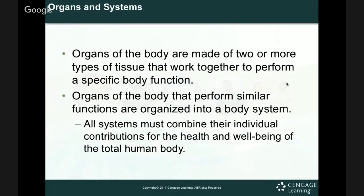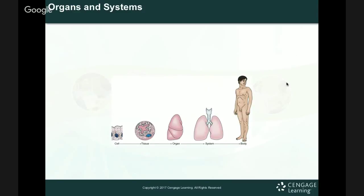The organs of the body are made of two or more types of tissue that work together to perform a specific body function. Organs that perform similar functions are organized into a body system — such as the muscular system, skeletal system, cardiac system, and respiratory system. Similar organs work together to get something done. We look at each organ, then the system, and then the hybrid — how they all work together. The hierarchy goes: cell, tissue, organ, system, and then the body.